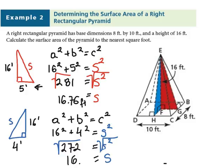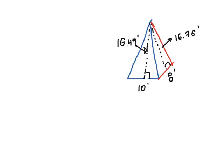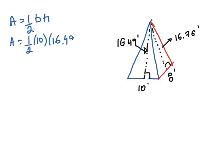Now we can find the surface area of the two different types of triangles. Using the area formula for the blue triangle — one-half base times height — with base 10 and slant height 16.49 feet as the height of the triangular face, the area of the blue triangle is 82.45 feet squared.